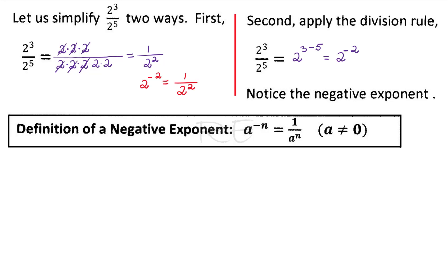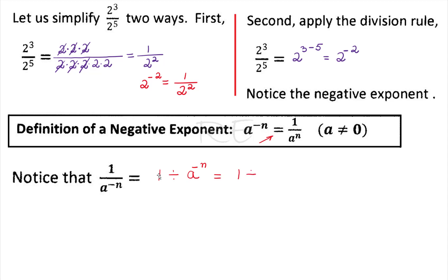Notice that the negative exponent means a displaced base: the base moves to the denominator and the exponent becomes positive. So a to the negative n equals 1 over a to the n, if a is not zero. Also, 1 over a to the negative n is a double inverse — 1 divided by (1 over aⁿ) equals aⁿ. So 1 over a to the negative n simply means a to the n.